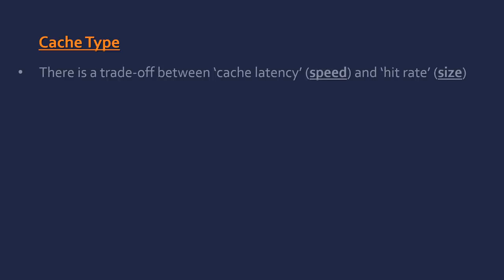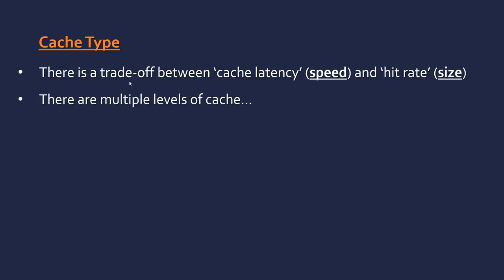Another factor is the type of cache, and this is because of the trade-off between speed and size. A larger cache gives a higher hit rate — you're more likely to get a cache hit because more data can be stored — but without other improvements, the latency (how quickly it responds) is going to go down because it's got more to search through. To deal with this trade-off, a modern computer will have multiple levels of cache.